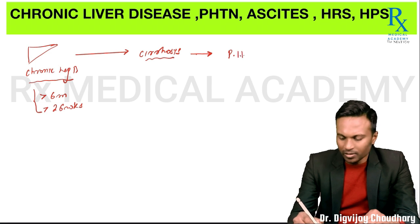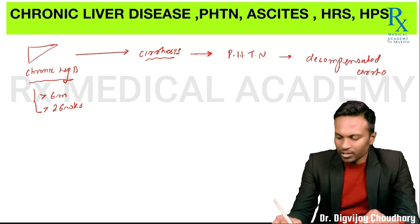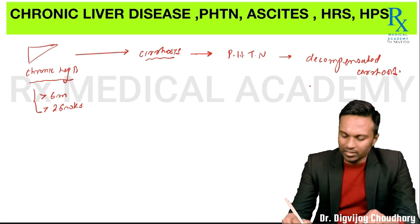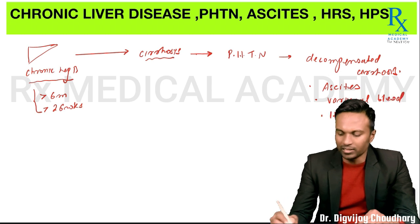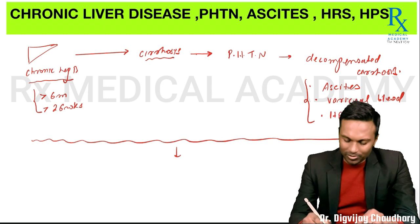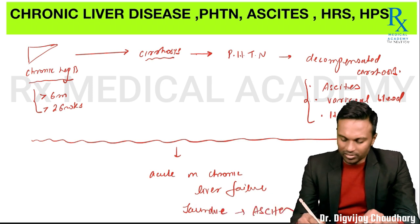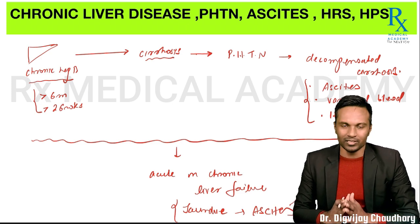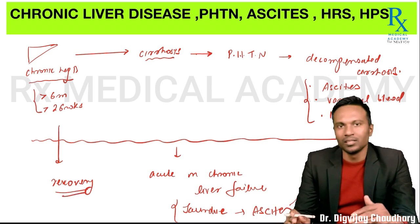Over a period of time, chronic hepatitis B can progress into cirrhosis — that is fibrosis of the liver. Cirrhosis can then develop portal hypertension, and then decompensated cirrhosis occurs when a patient of chronic liver disease develops ascites, variceal bleed, and hepatic encephalopathy. During this course of disease, the patient can develop liver failure — known as acute-on-chronic liver failure — with appearance of jaundice along with ascites.